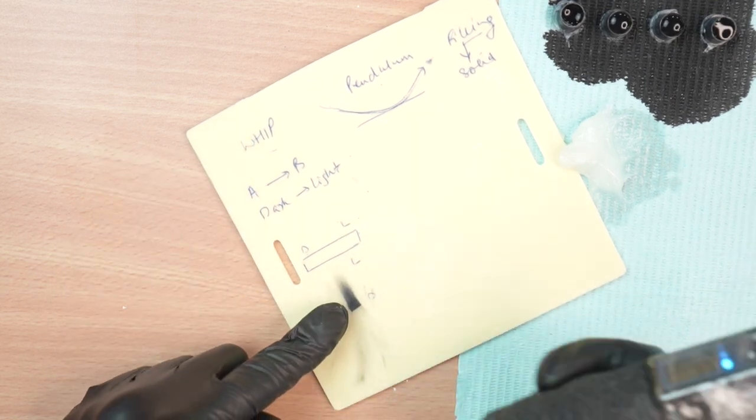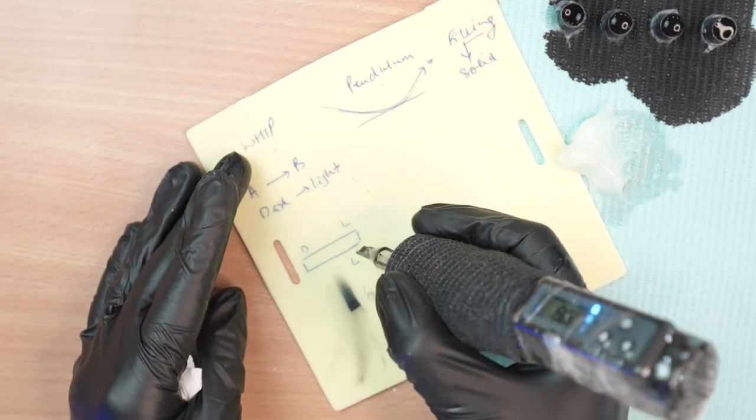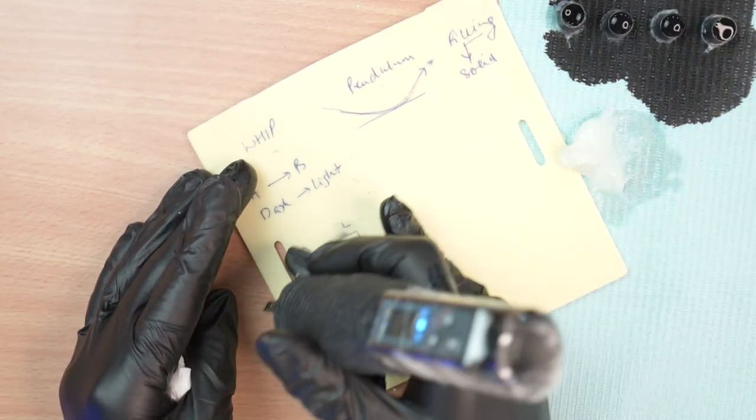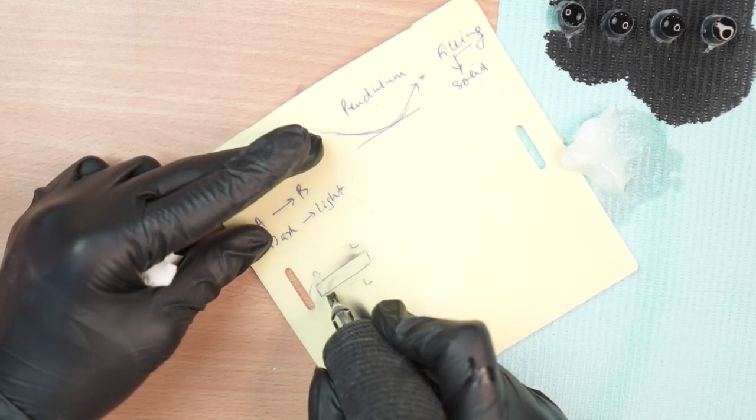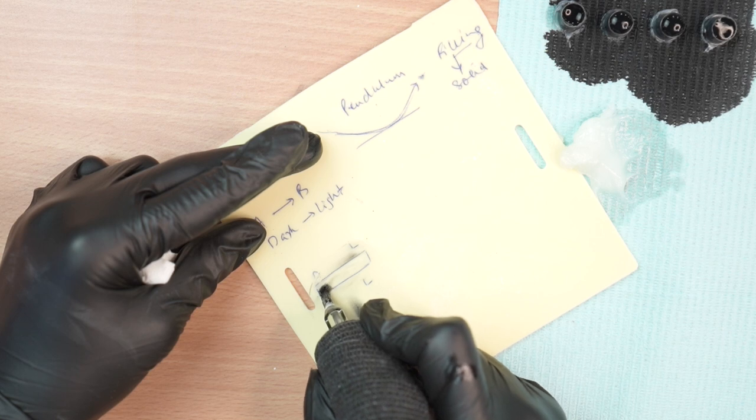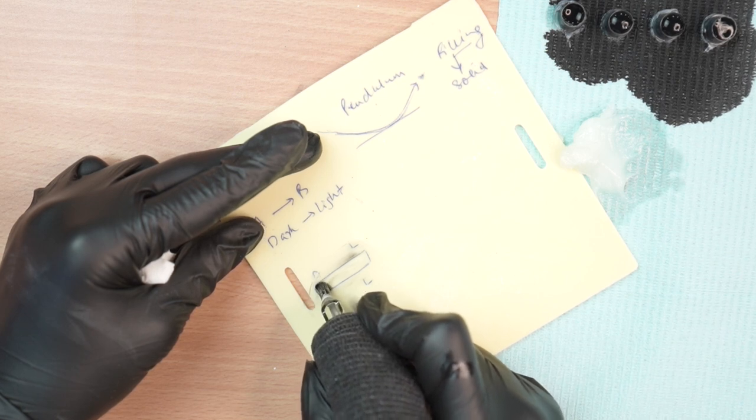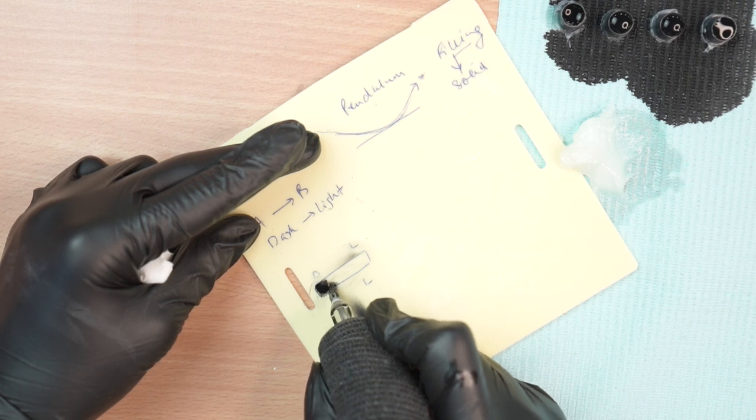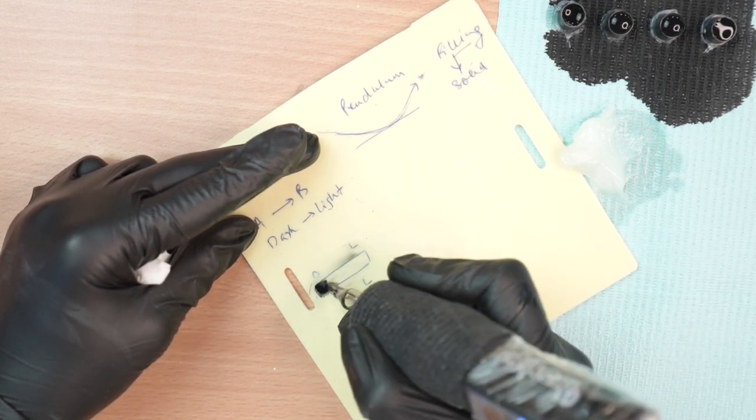So this process is called whip shading. Let me show you again by doing it here. I have taken again my black, some ointment, and then I'll fill inside and then just turn my machine and do it sideways.